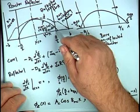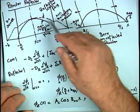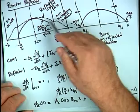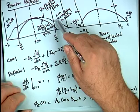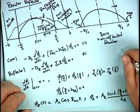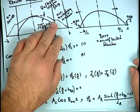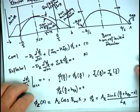We solved the diffusion equation in both the core and the reflector, and applied boundary conditions at the interface. The flux is continuous (same on both sides), and the current is also continuous at the interface — there is no source between the reflector and the core, so you have continuity of current in this situation.